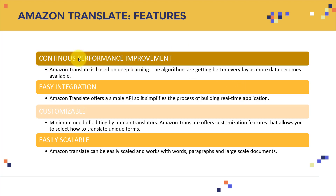So what are the features? First, continuous performance improvement: Amazon Translate is based on deep learning and the algorithms are getting better every day as more data becomes available. Second, easy integration: Amazon Translate offers a simple API, which simplifies the process of building real-time applications.